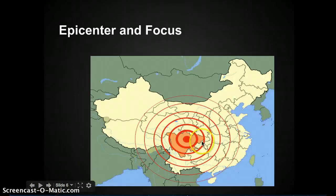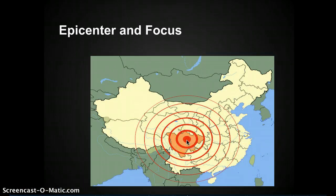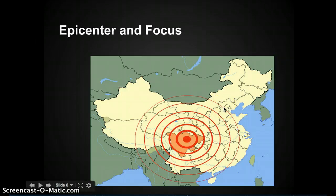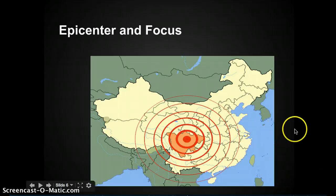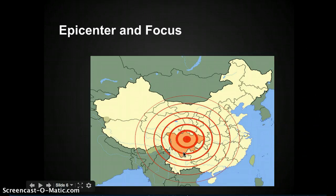Let's look at an earthquake here in China. If you were living in this city right here, you would feel it the strongest because you're at the epicenter. But if you were living a little farther away, you are farther from the epicenter, so the earthquake feels weaker and weaker. If you keep going — since this is China, Japan is over here, and California is all the way over here — you would feel it less and less, or not feel it at all, depending on how strong the earthquake was.